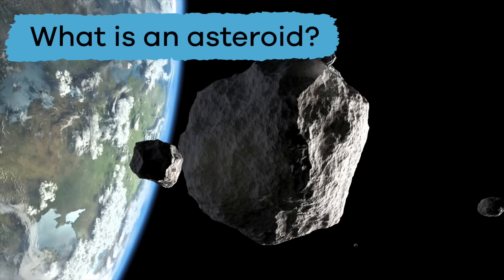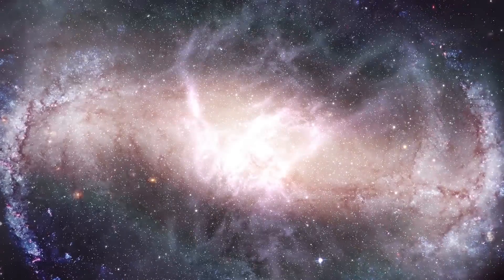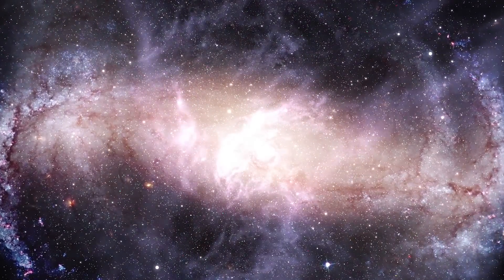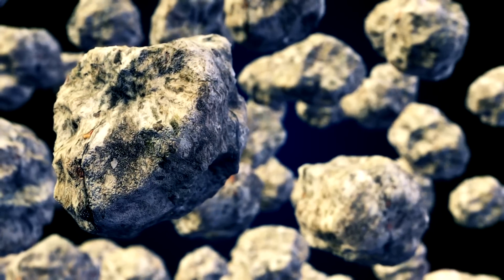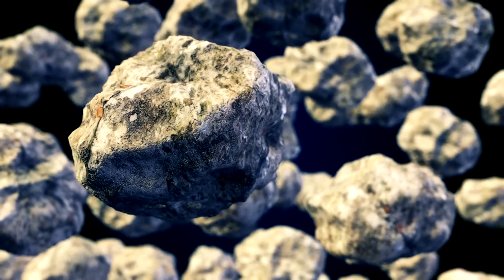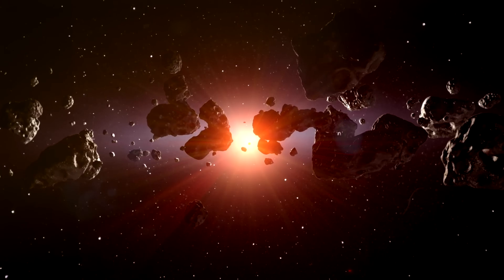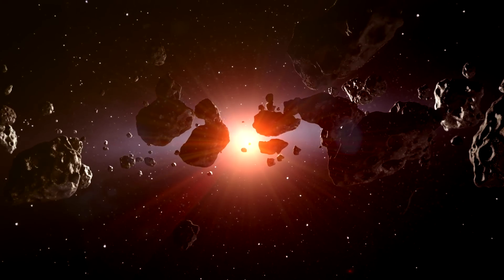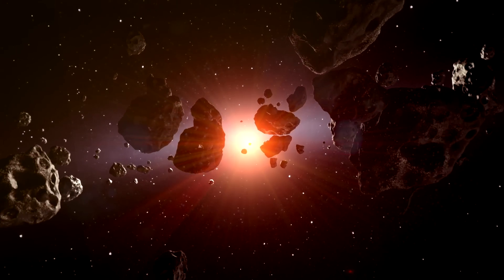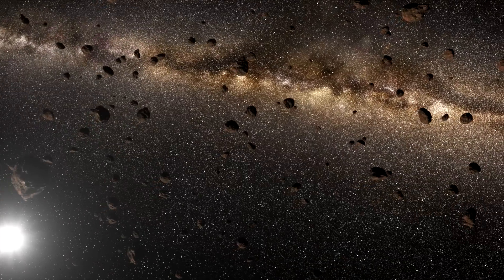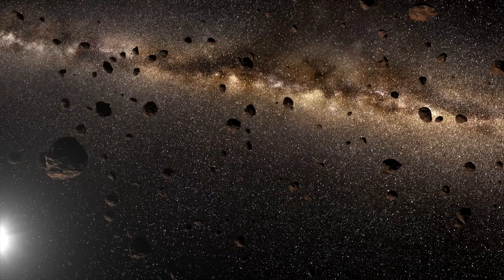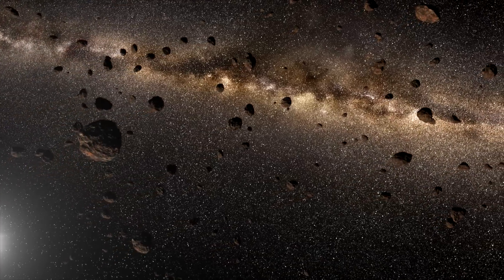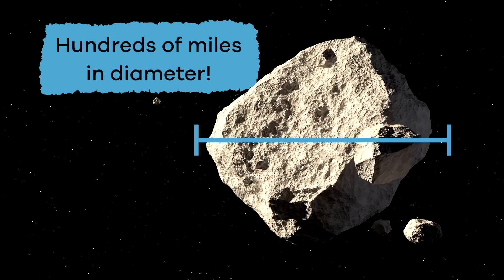What is an asteroid? Asteroids are pieces of leftover material from when our solar system was formed. An asteroid is a type of space rock. Like planets, asteroids also orbit the sun, but they are much smaller than planets. There are millions of asteroids in our solar system. They can range in size from a tiny piece of dust to hundreds of miles in diameter.